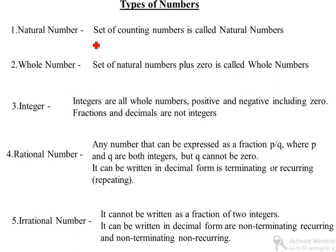Today we are going to learn types of numbers. Types of numbers: natural number, whole number, integer, rational number, irrational number, prime number, composite number.